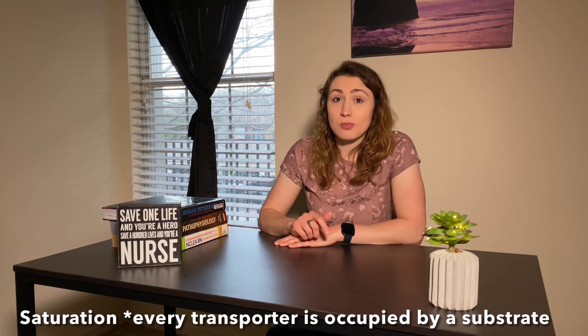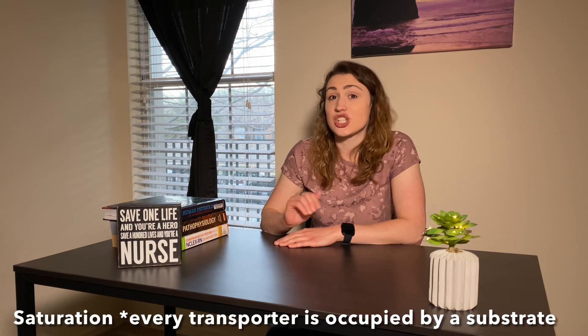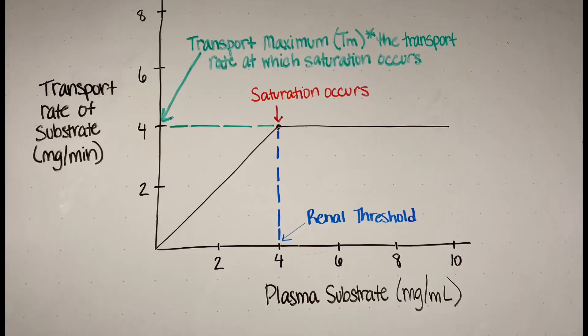Now let's talk about saturation. How many substances are reabsorbed back into the plasma depends upon how many transporters we have to carry these substances. Once every single transporter or carrier is occupied by a substance — or substrate — we call this saturation. Since 99% of what is filtered is reabsorbed, our transporters work really hard. Up until the point that we reach saturation, the transport rate — meaning the amount of substance transported per minute — is directly related to the concentration of that substance in the plasma. After we hit the saturation point, the transport rate is maxed out, and the term for this is transport maximum.